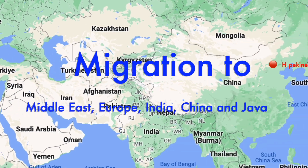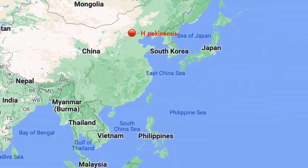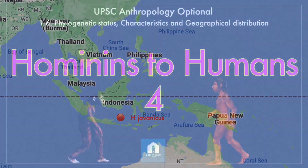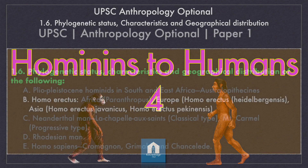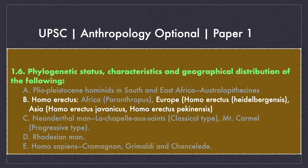They migrated to the Middle East, Europe, India, China and Java. Welcome to part 4 of the series Hominins to Humans. In this part, we are going to study 7 species within the genus Homo. If you have not watched the first 3 parts yet, I highly recommend you do so — links are in the i-button and in the description. This video series caters to topic 1.6 of the UPSC Anthropology Optional Paper 1, and this video focuses on the genus Homo.